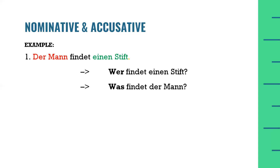Now let's try to identify the subject and the direct object of the sentence. Someone who performs an action is the subject, and someone that receives an action is the direct object. In this sentence, the man is performing an action, so 'der Mann' is nominative. The action is being performed on the pen, because it is something that is being found. Therefore 'einen Stift' is the direct object — the accusative case. 'Stift' is a masculine noun, so we use the indefinite article in the accusative case: 'einen.'